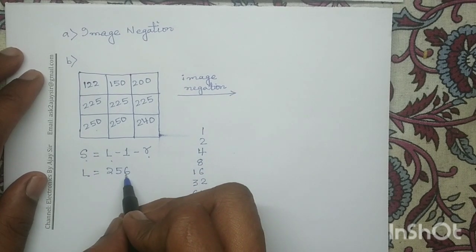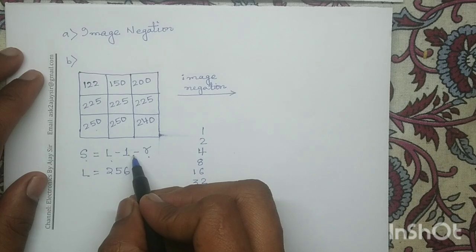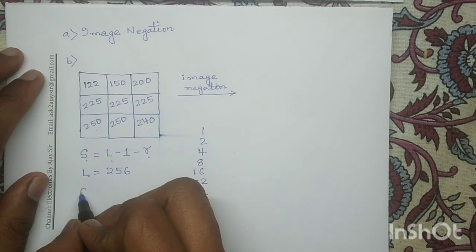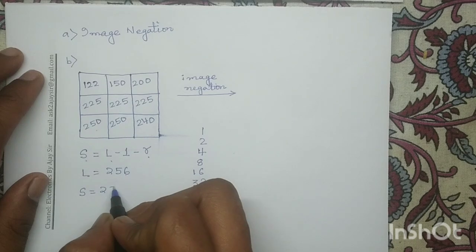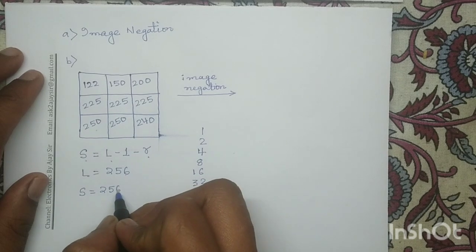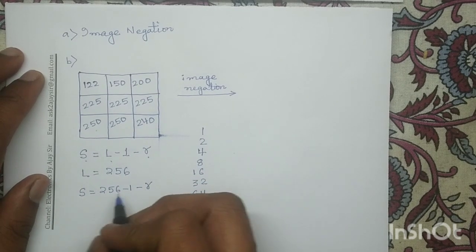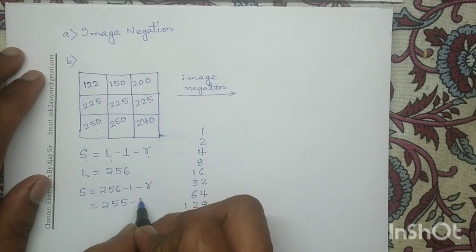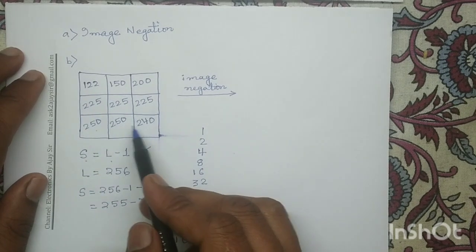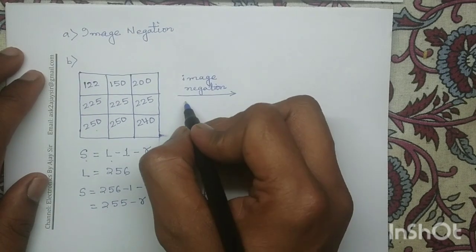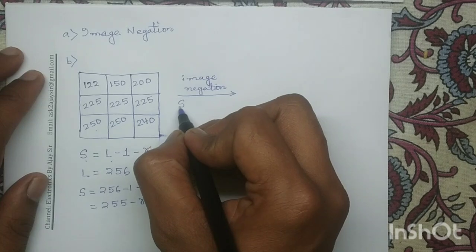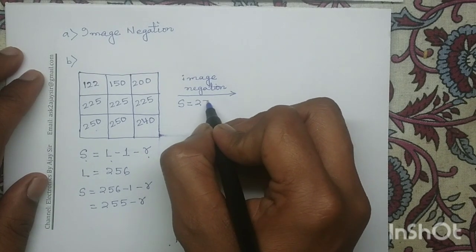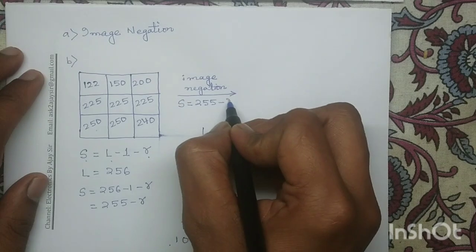Now with L equals 256, we substitute into the image negation equation and determine S. So S becomes 256 minus 1 minus R, which reduces to 255 minus R. On this given input digital image, we will apply the transformation operation S equals 255 minus R.